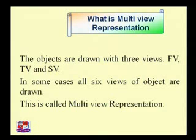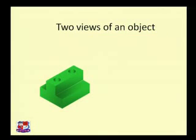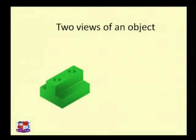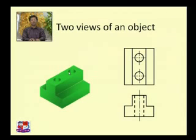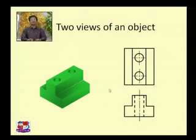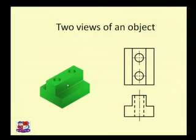In some cases all six views of an object are drawn — this is called multi-view representation. Suppose this is an object symmetrical about two axes: a vertical axis passing through the axis of two holes, and another axis passing between the holes. In this kind of object, two views — front view and top view — are enough to show all shapes and cover most dimensions. So multi-view is not needed here.